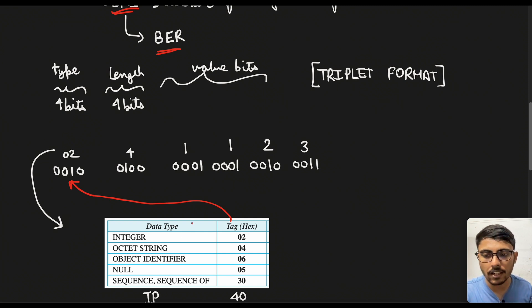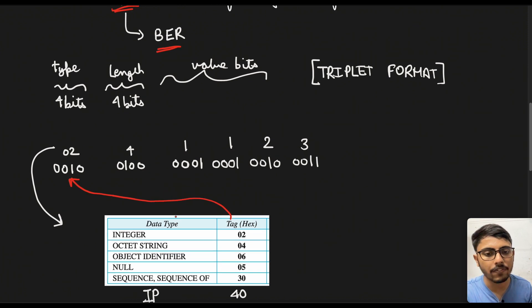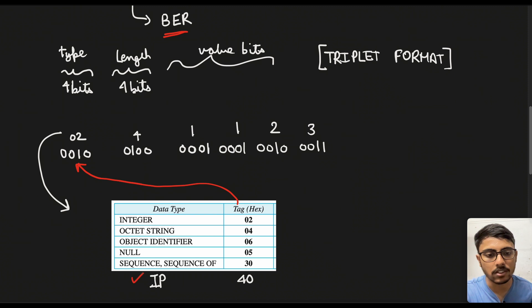Sequence is basically like an array is a sequence of values. Sequence of is basically a sequence of sequences. So if suppose we have a nested array, then we can call it as a sequence of. Now if we also add one more is called the IP. So IP address is a separate data type handled in SNMP SMI. So that has the tag or hex value as 40.